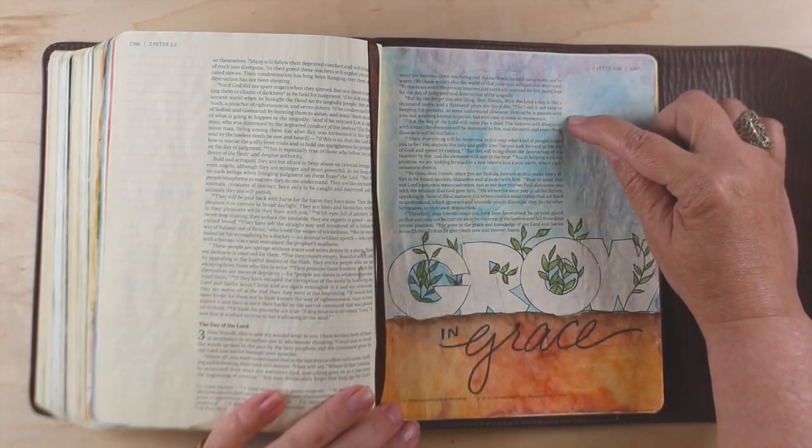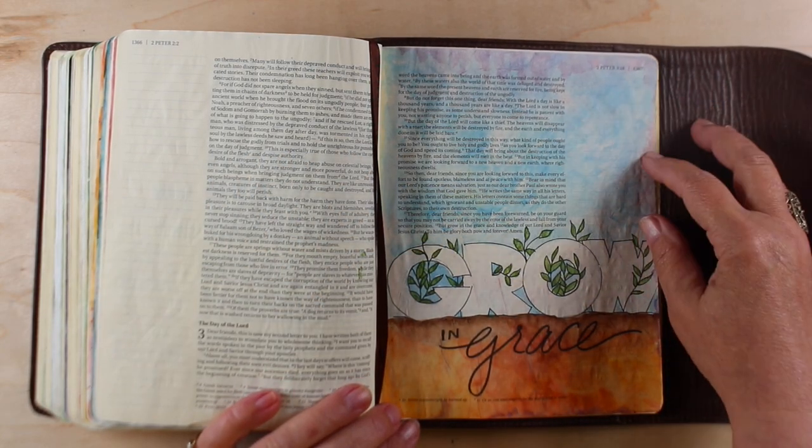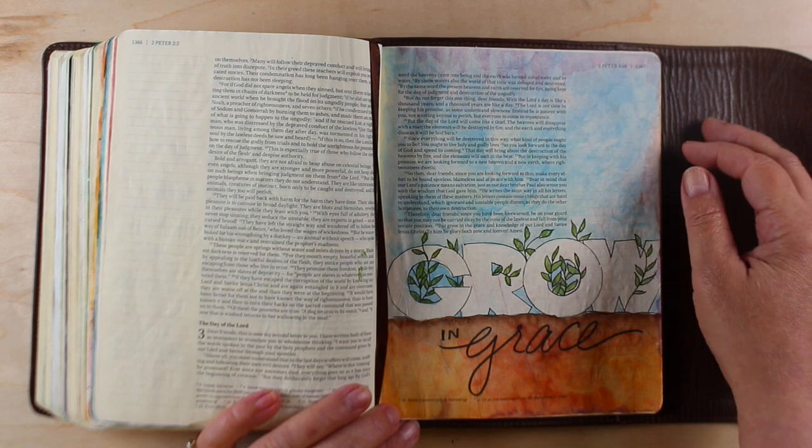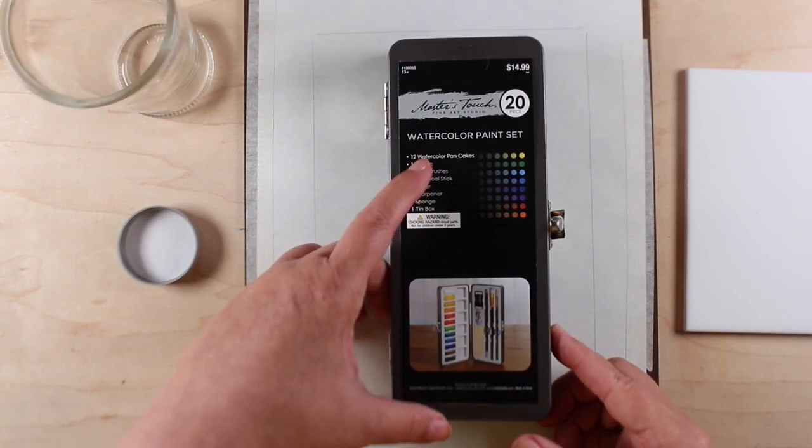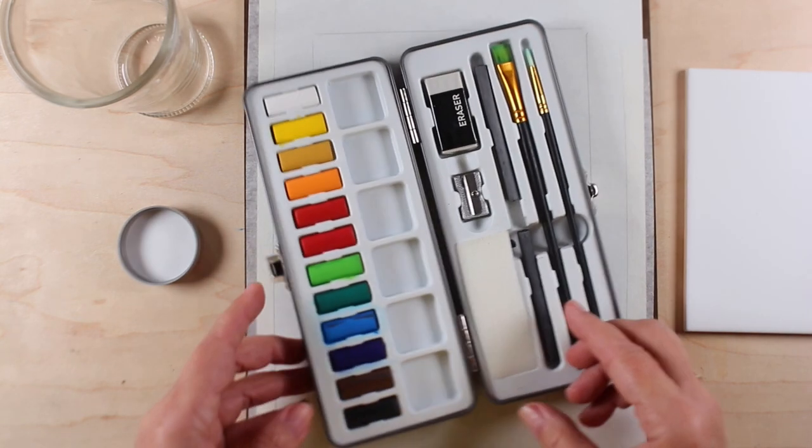It's a beautiful verse. I already have something on this page, but I do have room up there. I decided I wanted to do a tip-in, so I'm going to do it on some Tomo River paper and use these Master's Touch watercolors.